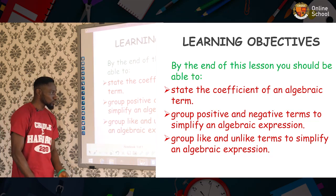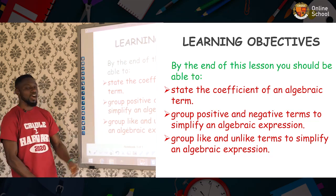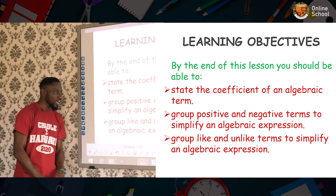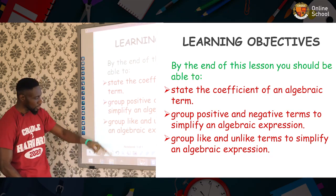The second thing you should know is, two, you should be able to group positive and negative terms to simplify an algebraic expression. And three, you should be able to group like and unlike terms to simplify an algebraic expression. Now, let's go to the class proper.